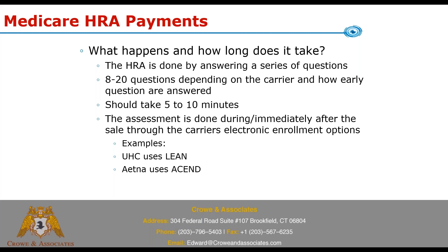This process should take about 5 to 10 minutes. The assessment for just about all these companies is done immediately after or during the appointment. You do the meeting with the member, complete the enrollment application, and it really prompts you to do the HRA immediately — after the application's been completed, but before it's finalized through the carrier's app. Most of these HRAs are done through the carrier's apps. We are adding more of these to Connect for Medicare — I'll give an example of that in a minute.